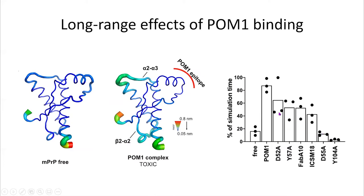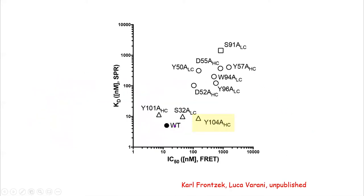We found that the variant where tyrosine at position 104 of the heavy chain is substituted with alanine essentially completely abrogates formation of the hydrogen latch. All these molecules were synthesized by Luca Varani, and Karl Fronczek measured affinity for the target by surface plasmon resonance and FRET — the results largely overlap. Some mutants completely lost their affinity, but some, including the tyrosine-104-alanine heavy chain substitution, retained essentially the entire affinity of the wild-type antibody.